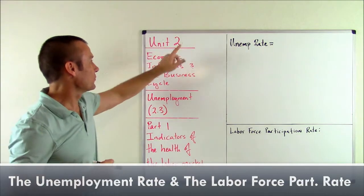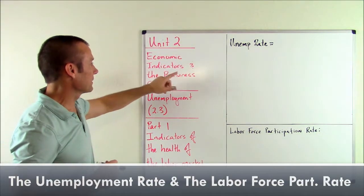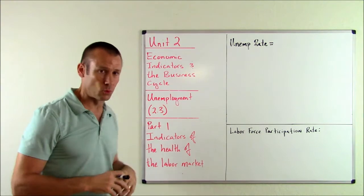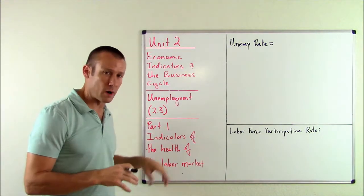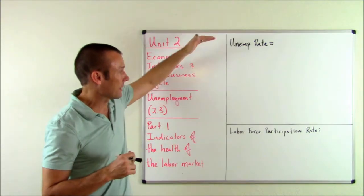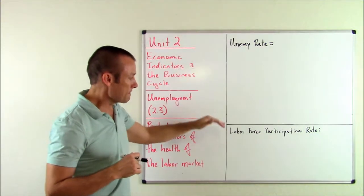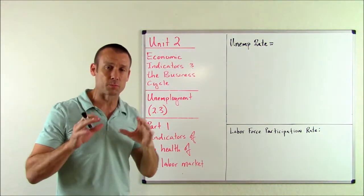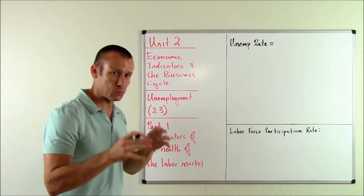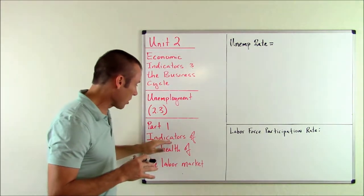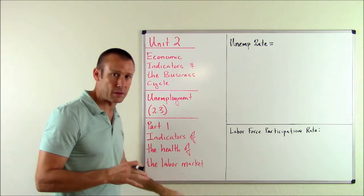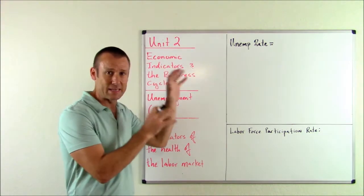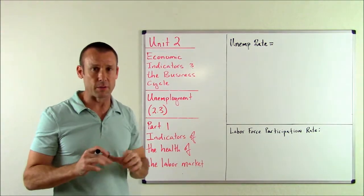Hey everybody, welcome back. We are on Unit 2, Economic Indicators and the Business Cycle. We are on Sub Unit 2.3, Unemployment, and this is Part 1. In Part 1, we're going to be looking at two measurements: the unemployment rate and the labor force participation rate. We want to see how these measurements are indicators of the health of the labor market.